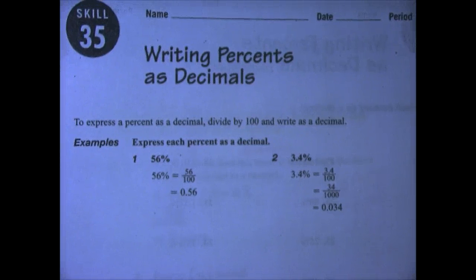Let's begin skill 35, writing percents as decimals. This is the last skill in RTI packet number 4, which is due on Friday, January 16th, and the quiz will be on Tuesday, January 20th.